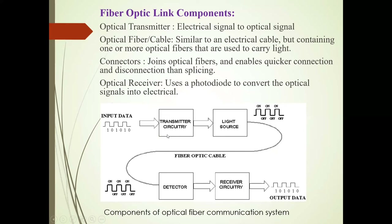Now we will see the functions of these components one by one. Optical transmitter — it converts electrical signal to optical signal. Optical fiber or cable — it is similar to electrical cable but contains one or more optical fibers used to carry light. Connectors — these join optical fibers and enable quick connection and disconnection. Optical receiver — it uses a photodiode that converts the optical signal back into electrical signal.